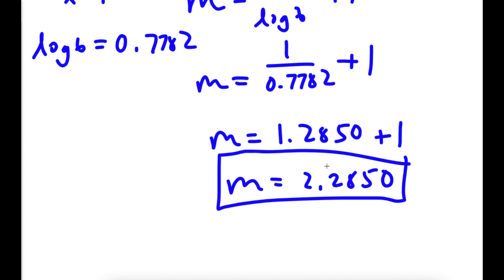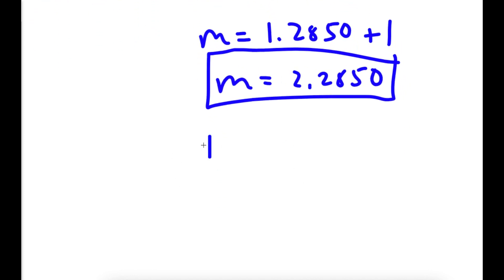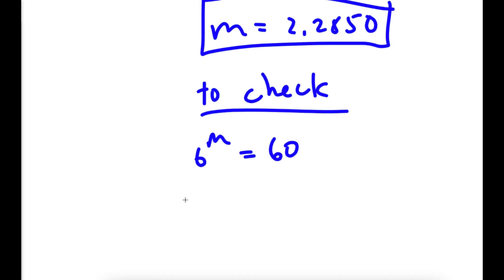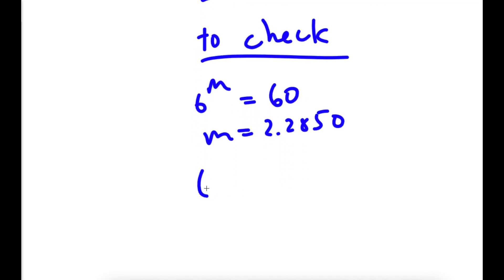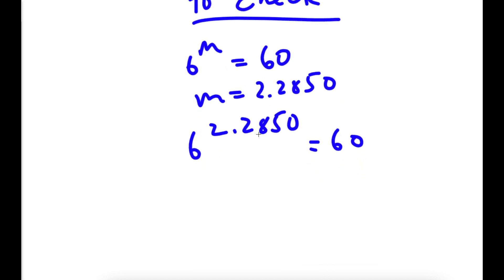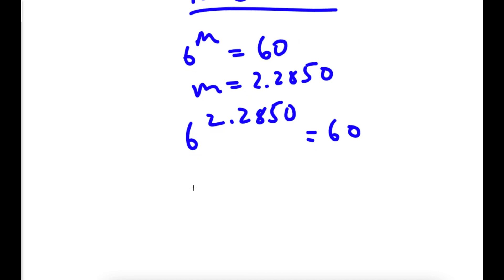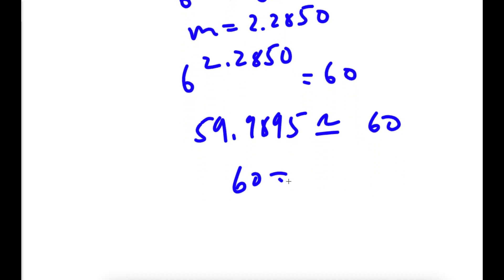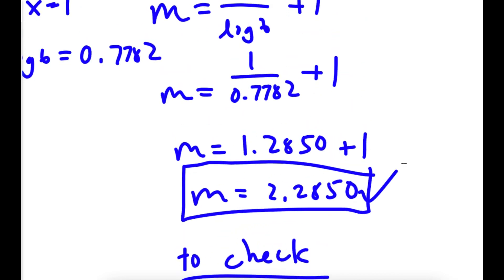Now we aren't done yet — we are going to check to see if the solution is right. So we have 6 to the power of m is equal to 60, and m is equal to 2.2850. So if I plug in m, I get 6 to the power of 2.2850 is equal to 60. And 6 to the power of 2.2850 is approximately 59.9895, which rounds up to 60. So I have 60 is equal to 60. Because this is right, our solution is right as well.